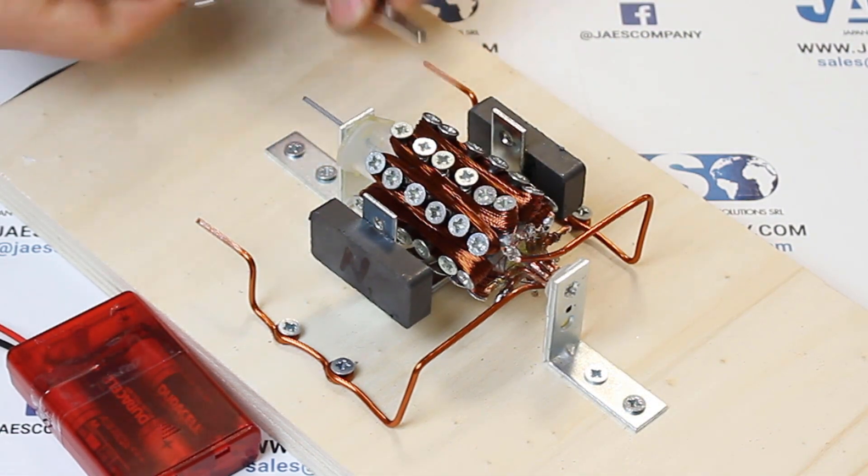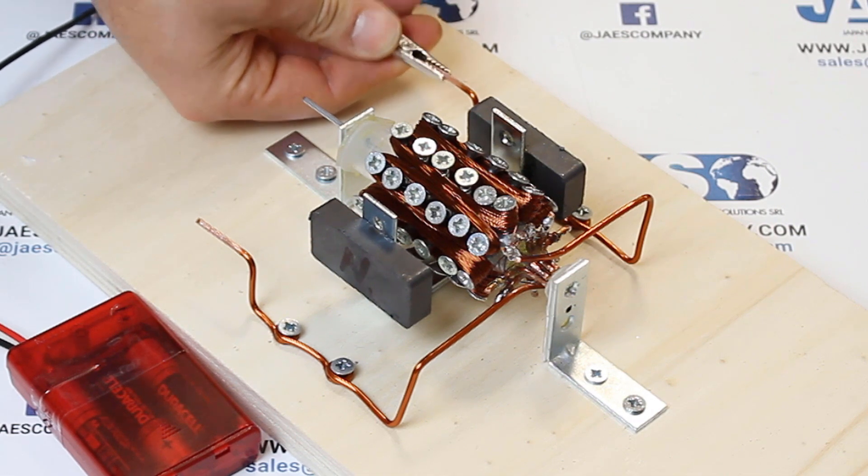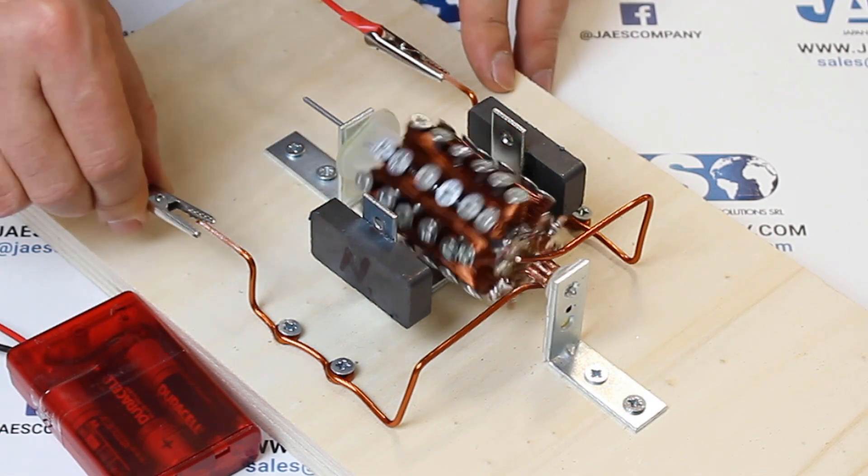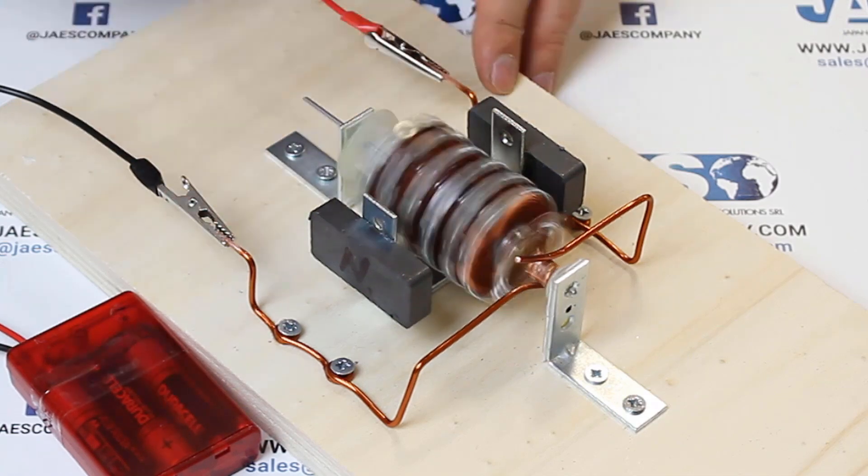If we try to plug the clamps in the other way, our DC motor changes rotation.